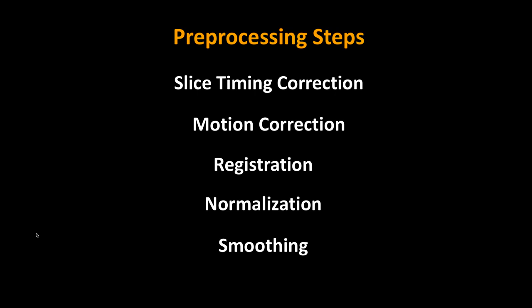One of these steps — smoothing — is done as part of the default preprocessing pipeline, but the actual connectivity analyses are not done on the smoothed data. Slice timing correction is a step where some people do it and some people don't. If you have a very short TR around one second, slice timing correction doesn't seem to make too much of a difference in some resting state analyses.